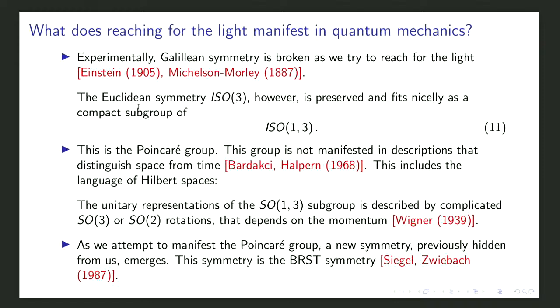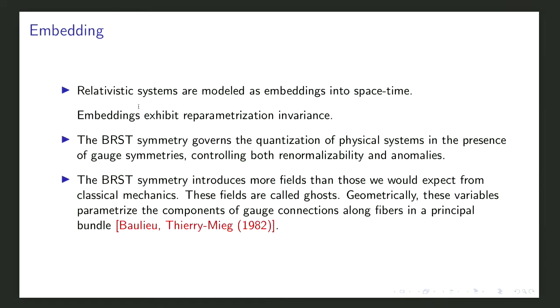As we attempt to make the Poincaré symmetry manifest, a new symmetry previously hidden emerges: the BRST symmetry. This is discussed in the Segal–Zubar paper in 1987, in the context of superstring theory and its second quantization. Unfortunately this role of BRST symmetry was first perceived by string theorists and is not widely known — its importance covers all of particle physics and field theory, not just string theory.